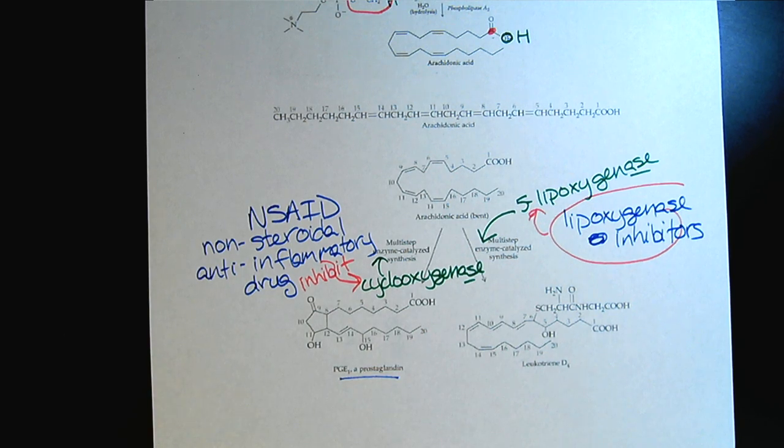That pretty much wraps it up. That's all you're responsible for with eicosanoids. You want to know about where the arachidonic acid comes from—the hydrolysis of the phospholipid—and then the role of the anti-inflammatory drugs to inhibit the enzymes. Take time now to work a few homework problems to reinforce your understanding. Thank you.